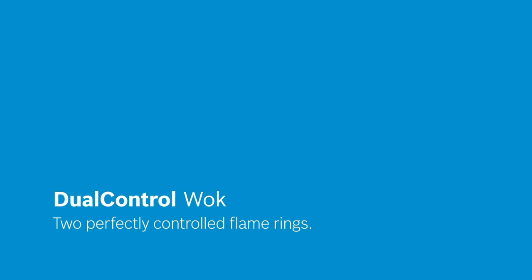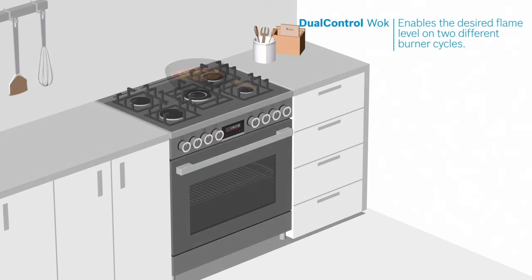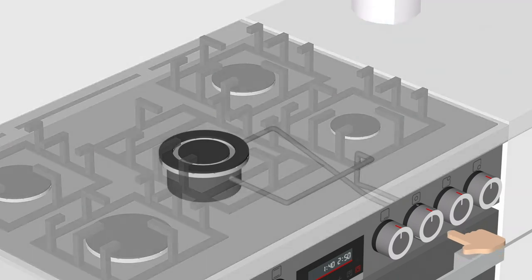Do you find it hard to get your desired flame level on a single burner? Not anymore. Thanks to the dual control wok on your new Bosch range cooker, you can get a wide array of cooking flame levels on a single burner with just the turn of a button.